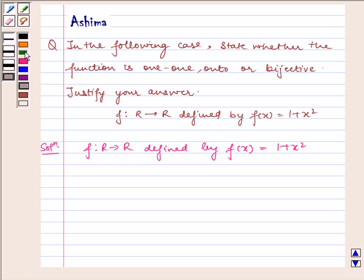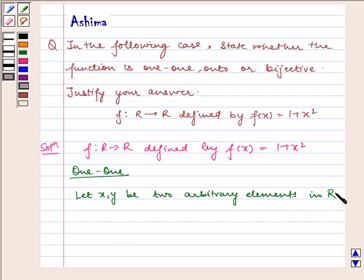Now let us check for one-one. Let x, y be two arbitrary elements in R. Then f(x) = f(y), which implies 1 + x² = 1 + y². The ones cancel out.